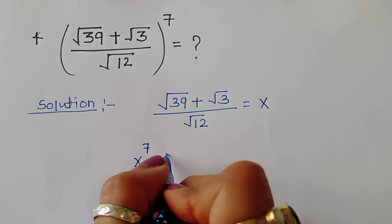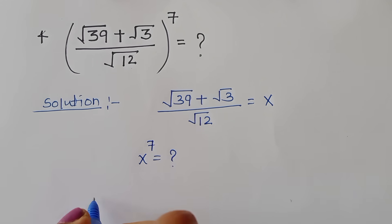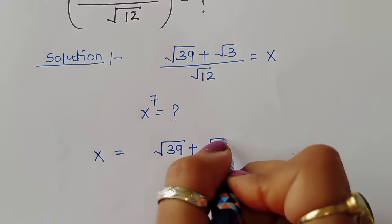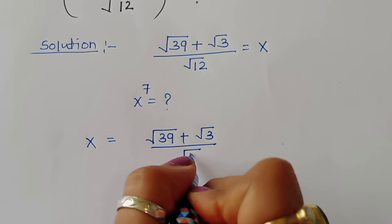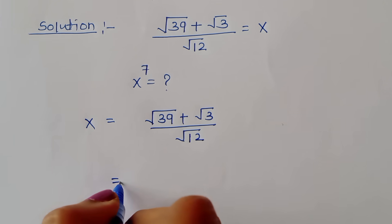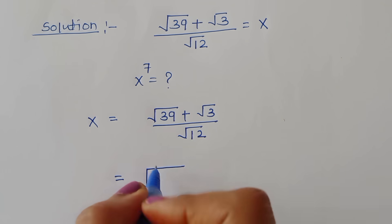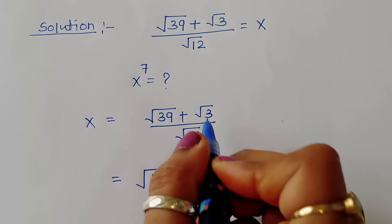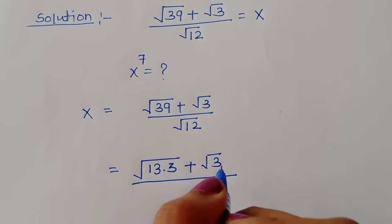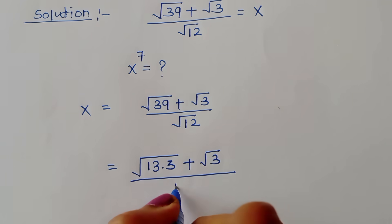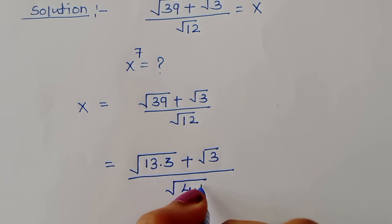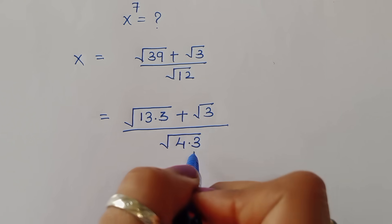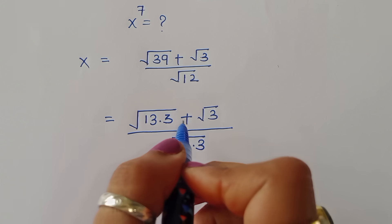So x is equal to (√39 + √3) / √12. We can convert √39 into √(13 × 3), since 13 × 3 = 39. Also √12 = √(4 × 3). We notice that √3 appears in all terms, so we convert everything into a form involving √3.